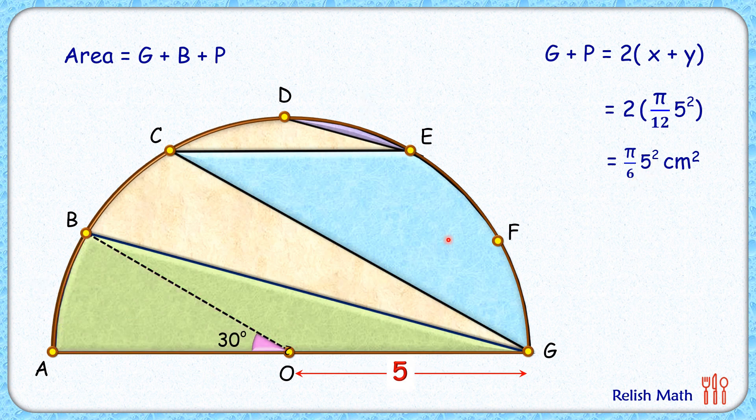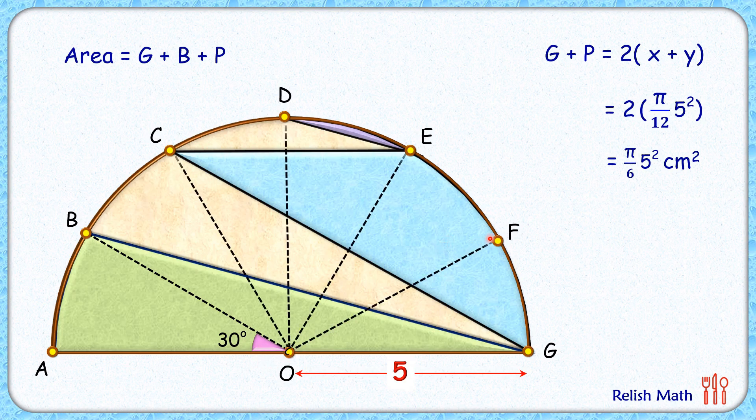Now what's left is to find this blue area to get the total area. Let's join the center to these points. Again, each angle here is 30 degrees, so this combined angle will be 60 degrees.